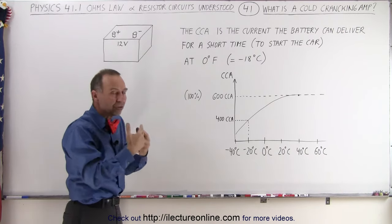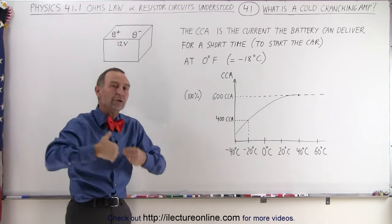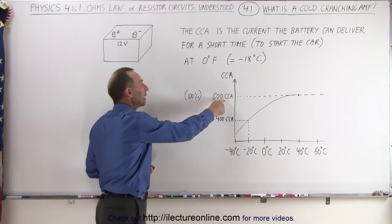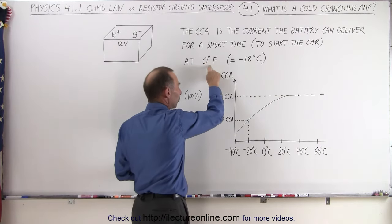The amount of charge per unit time the battery can produce, the amount of current the battery can produce, is called the cold cranking amps when the temperature is down to zero degrees Fahrenheit.